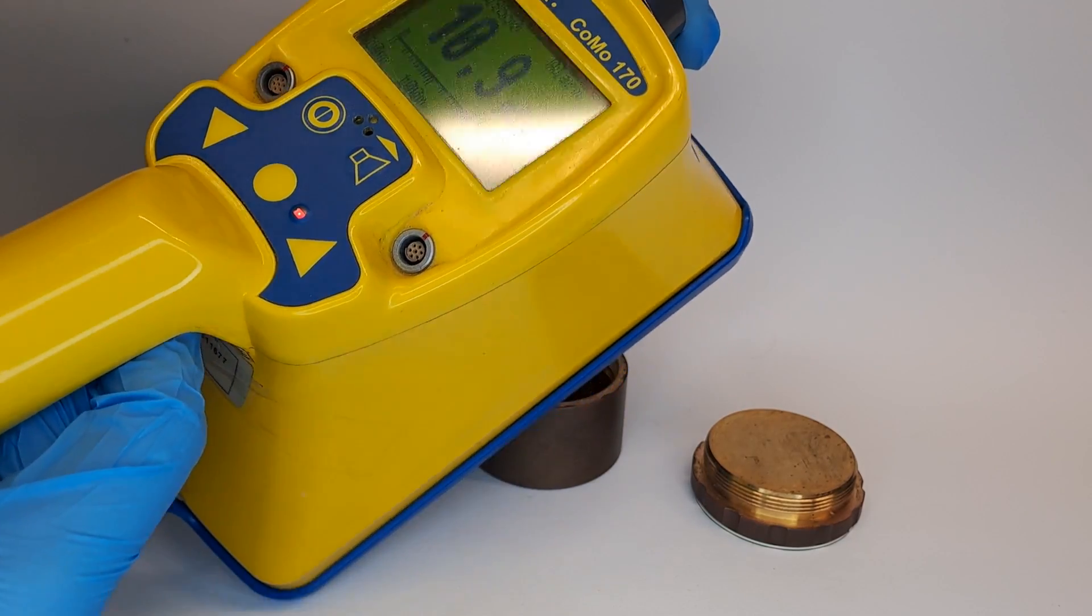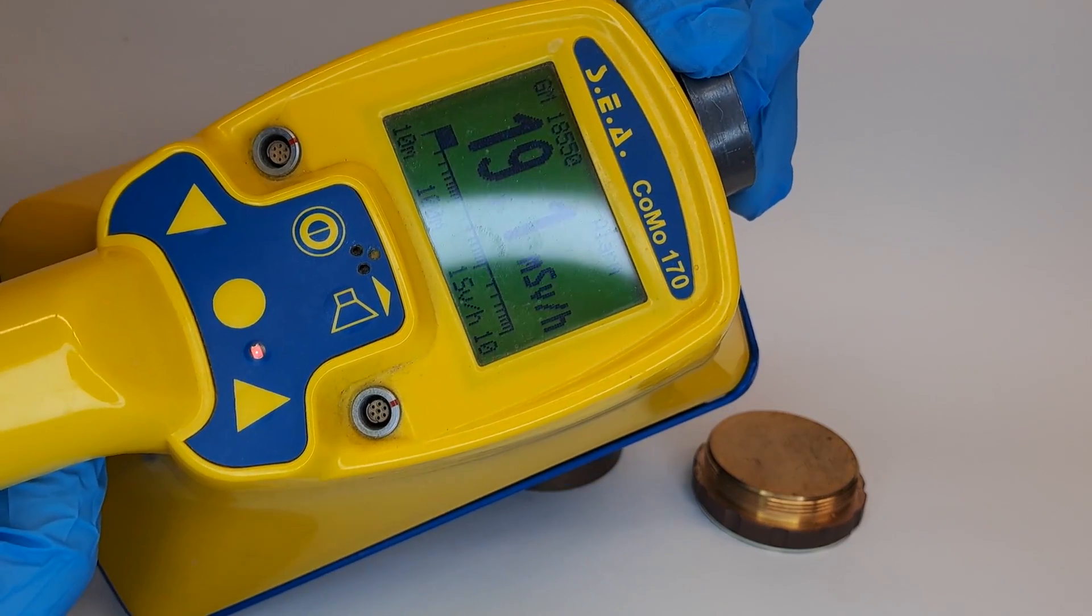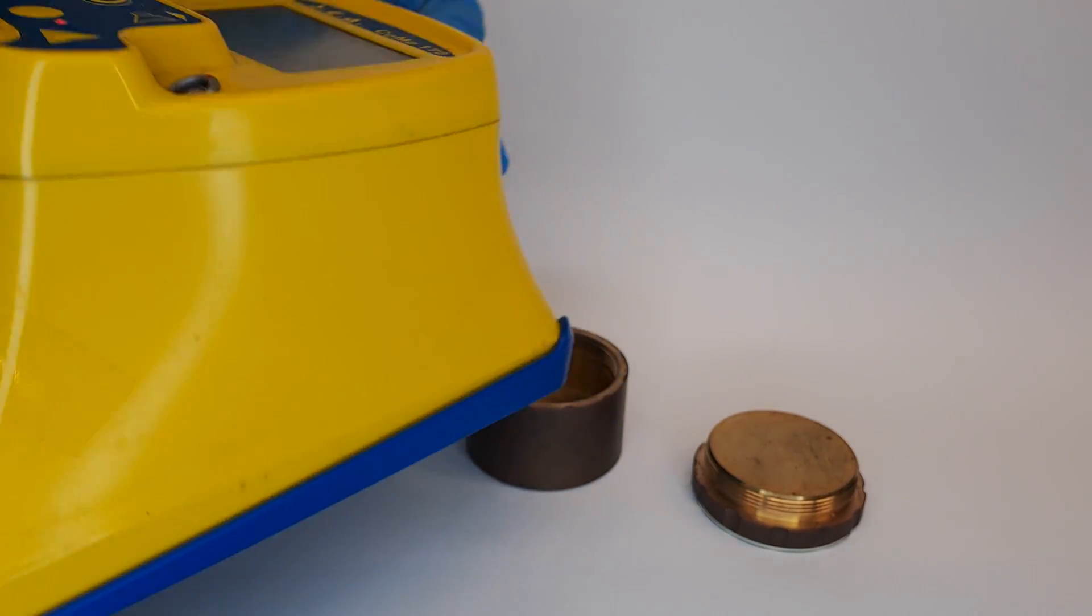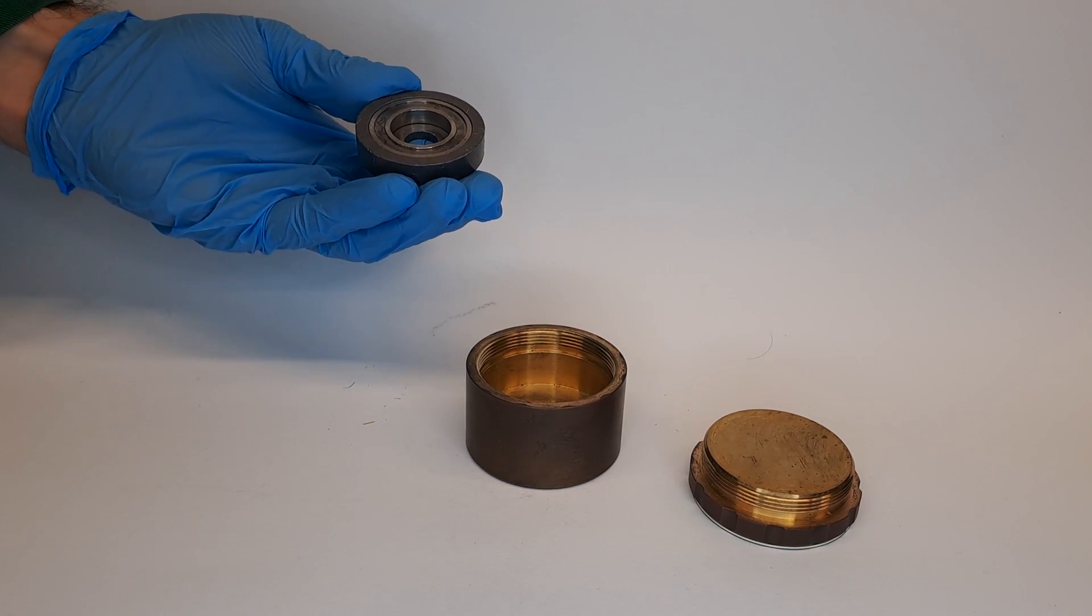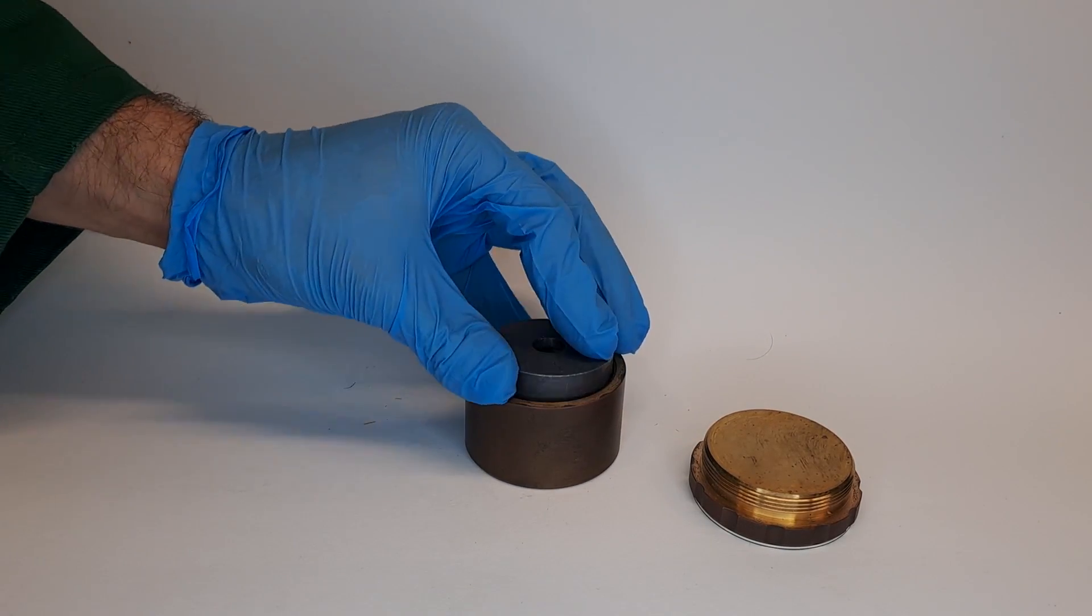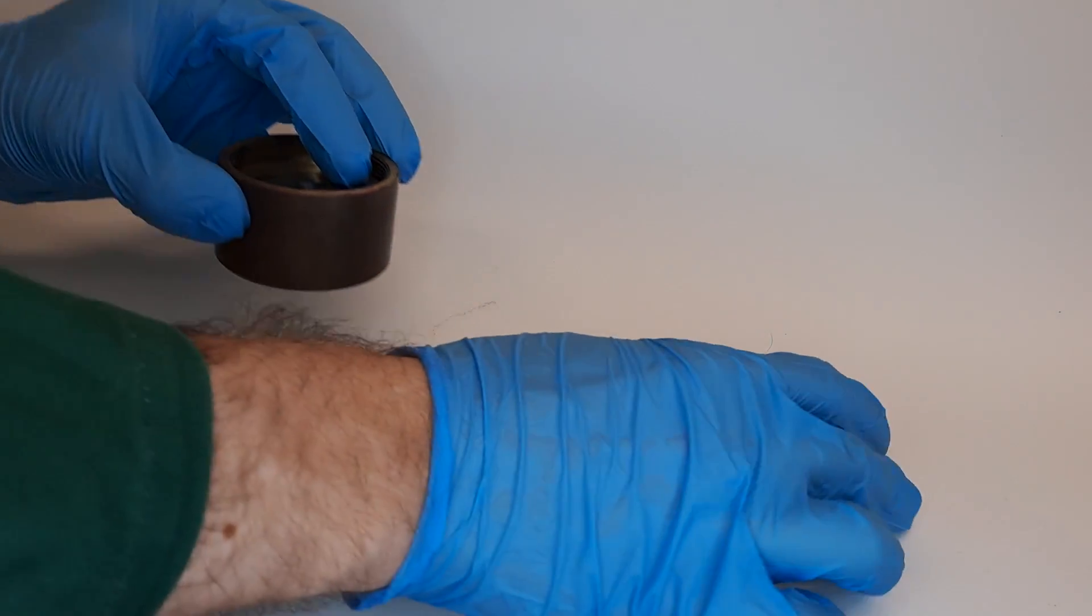The contact dose rate even overwhelms the COMO-170 which has a maximum limit of 20 mSv an hour. I couldn't handle any other source with that high of a contact dose rate so casually. Since all forms of radiation of americium are easily shielded, it is possible in this case.